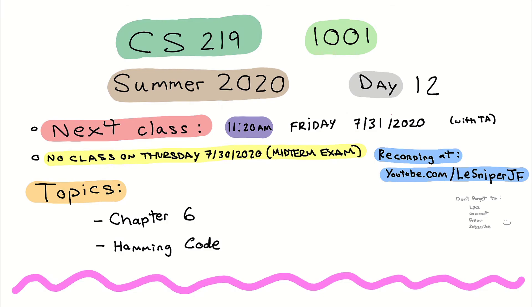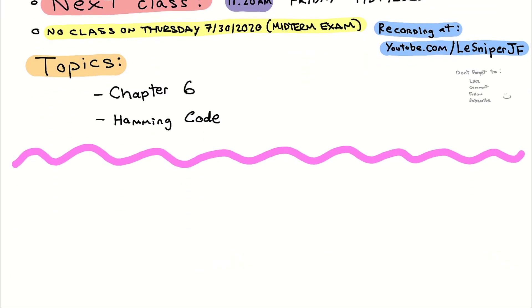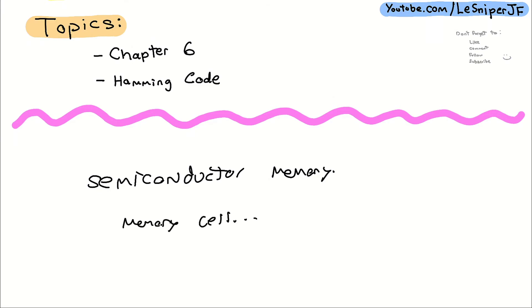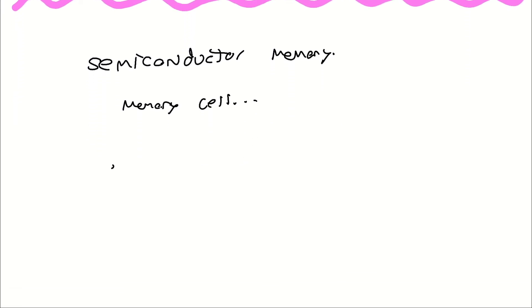That's your big memory that you have. In the most basic sense, memory is considered to be a semiconductor memory. A semiconductor memory is a memory cell, and while there are many technologies to implement this, they all share three main properties: being able to read into the memory, to write into the memory, and to store the state as well.